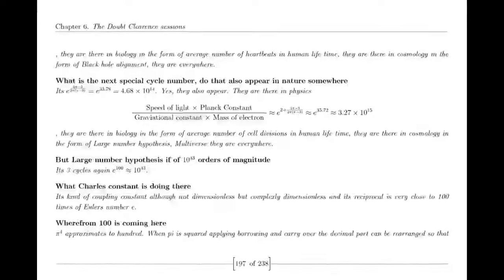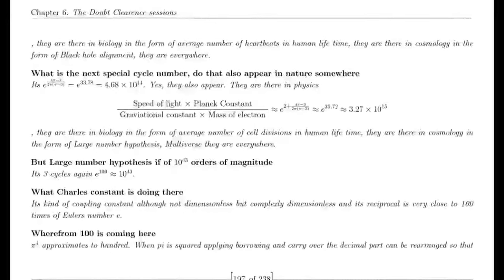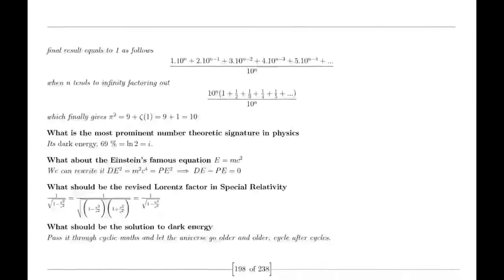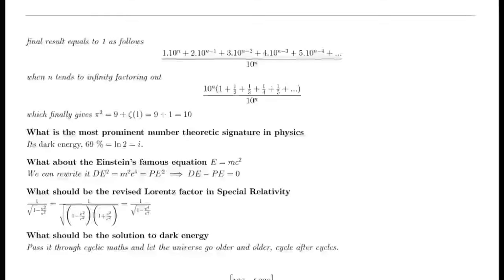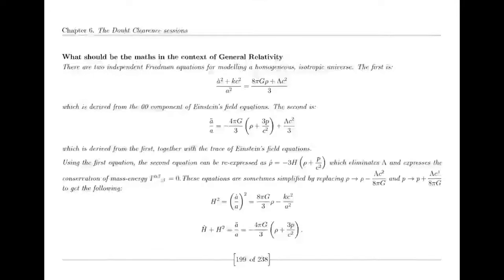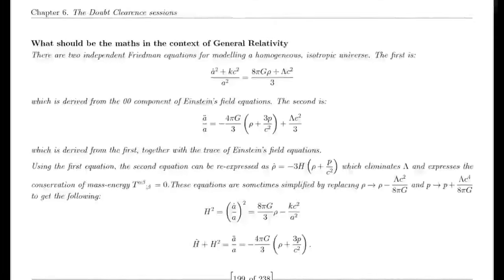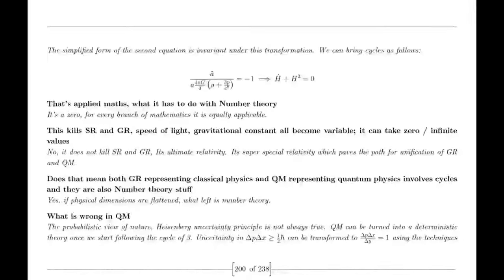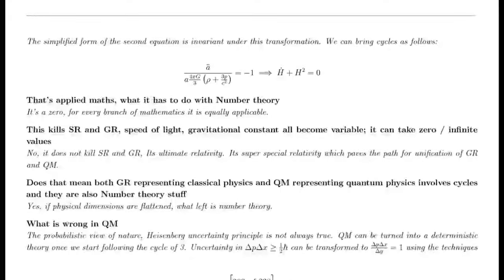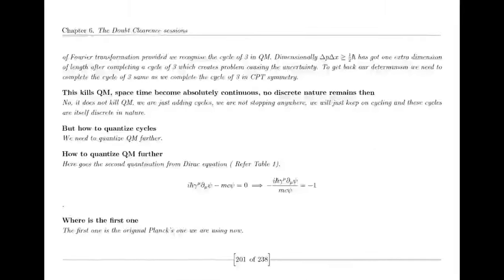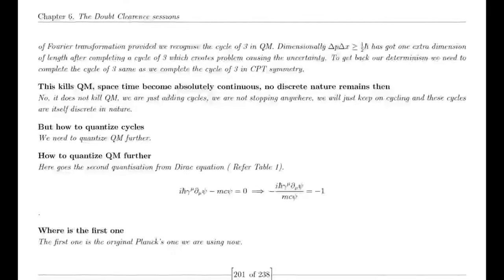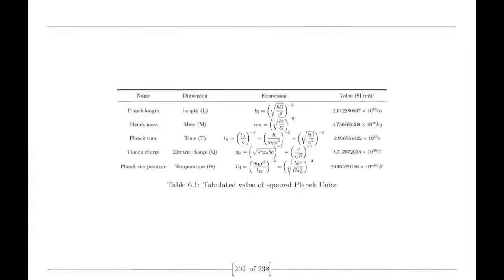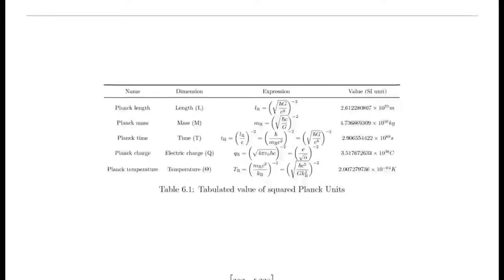As Suraj continued his journey through the mathematical landscape, he ventured into an intriguing realm — the transition between complex numbers and real numbers within the framework of decimal numbers. He sought to establish a set of rules governing basic mathematical operations — addition, multiplication, subtraction, and division — specifically tailored for this transition. He named this new concept simplex numbers, and the associated operations simplex operations. Suraj envisioned simplex numbers as a way to bridge the gap between complex and real numbers, allowing for a seamless flow between these two realms, with the goal of simplifying calculations and enhancing understanding, particularly for those new to complex analysis.